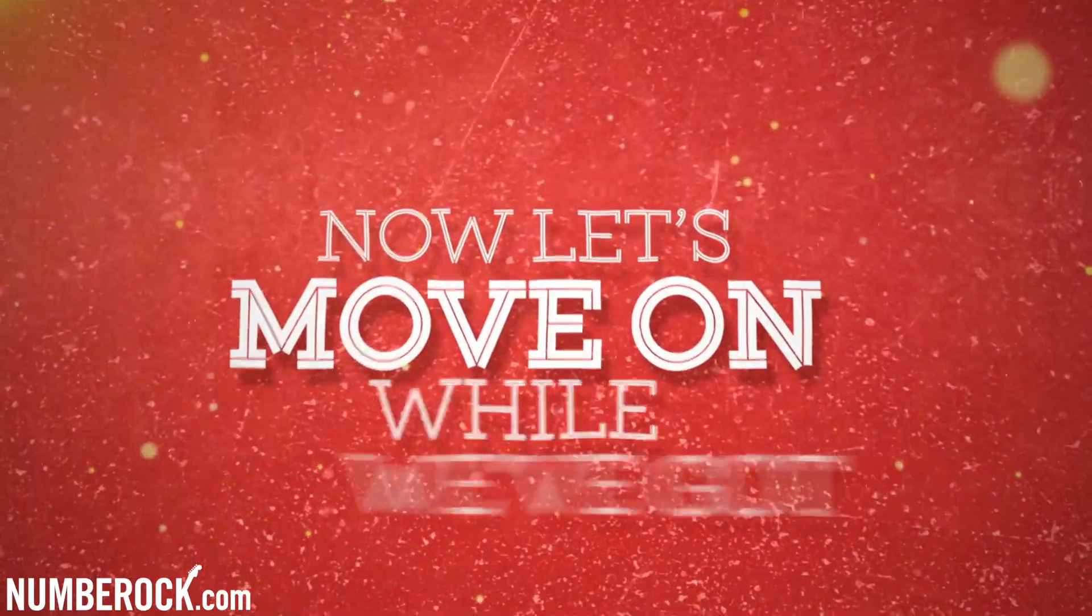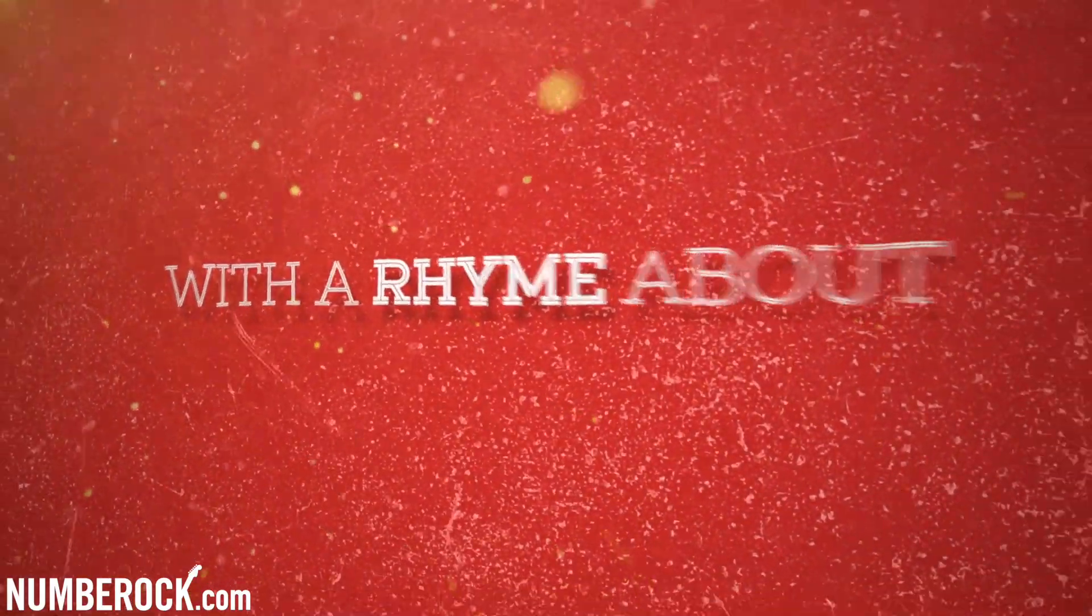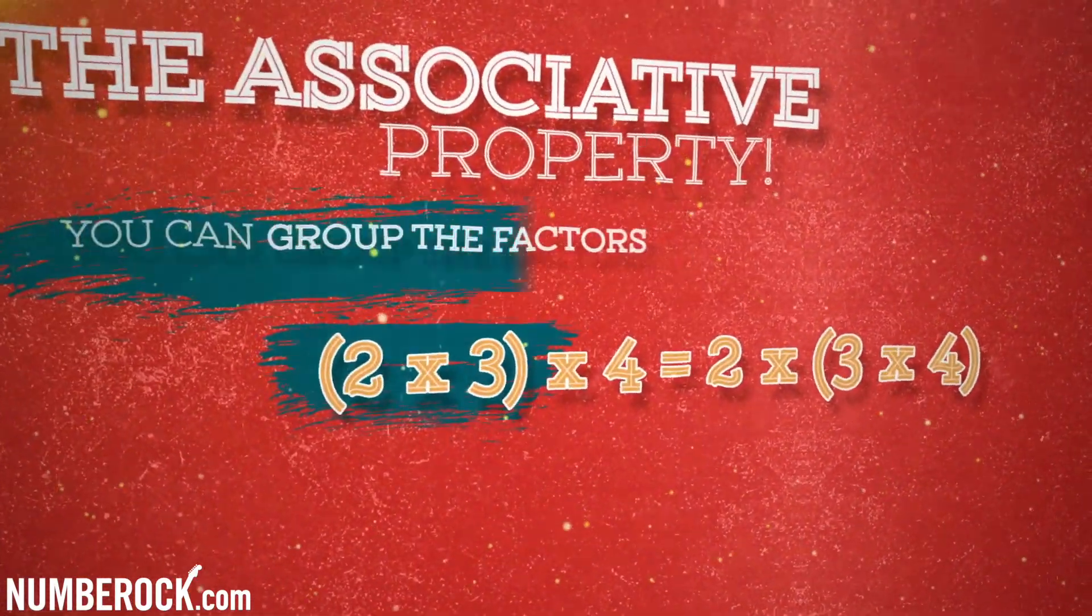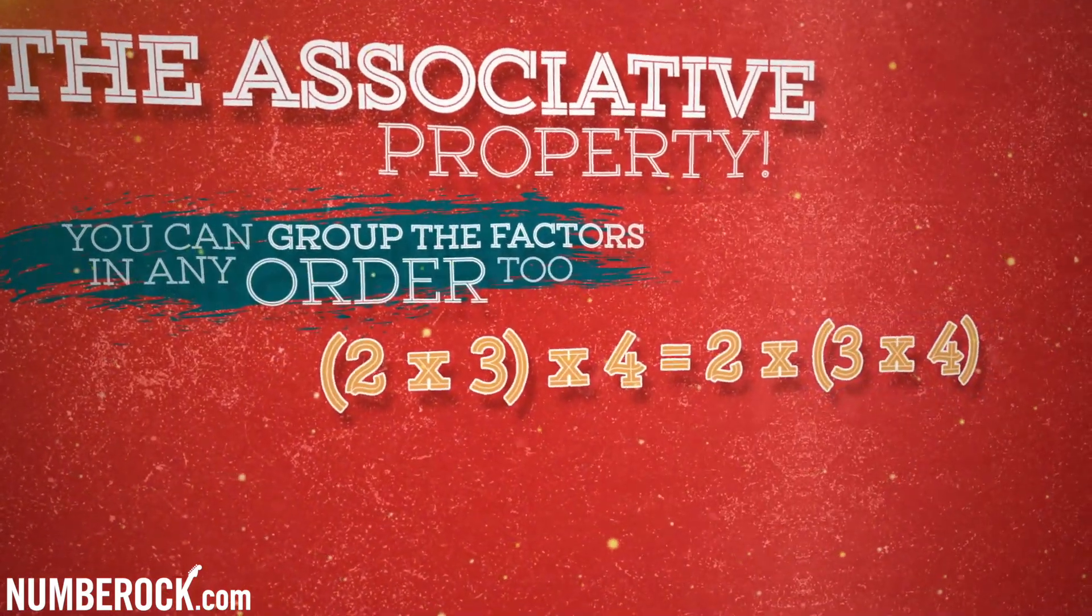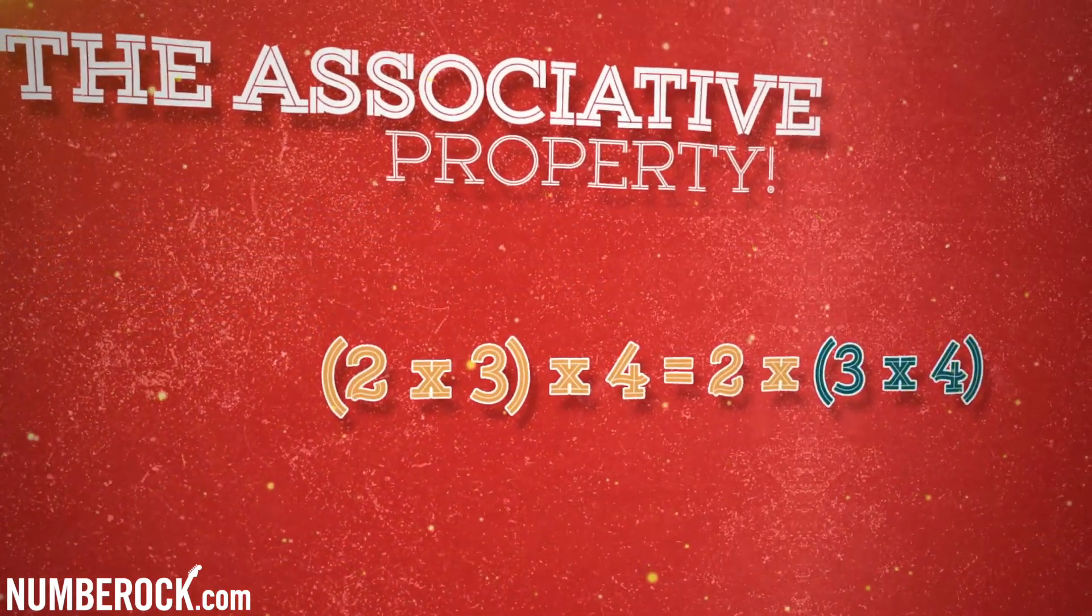Now let's move on while we've got the G with the rhyme about the associative property. You can group the factors in any order, too, like two times three times four equals three times four times two.